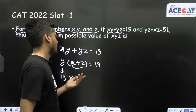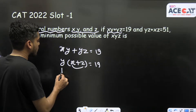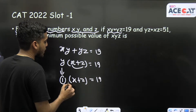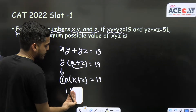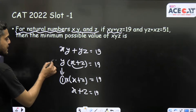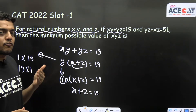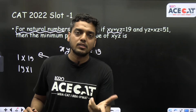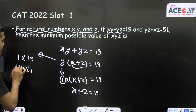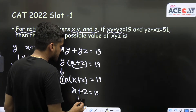Two natural numbers' sum cannot be one, so we must take y = 1 and x + z = 19. The value of y is now fixed at 1. So from the first equation, y = 1 and x + z = 19.